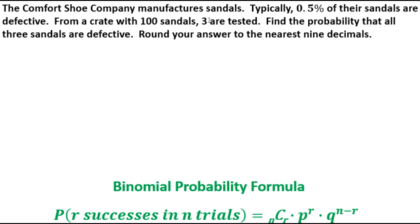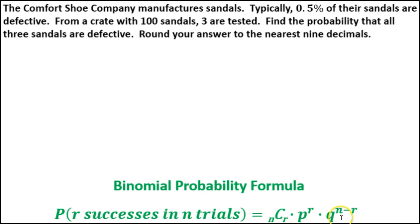So the binomial probability formula is this right here. We've got a combination, we've got some p's, q's, n's, and r's. We've got to determine what those are, so let's kind of go through each one of them.